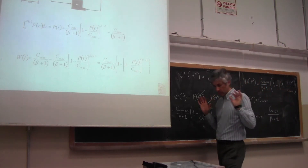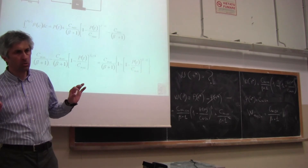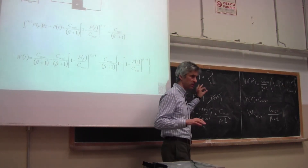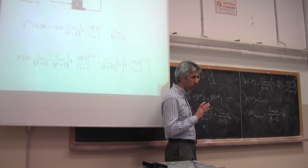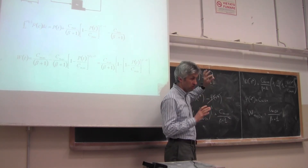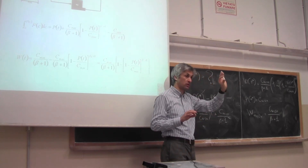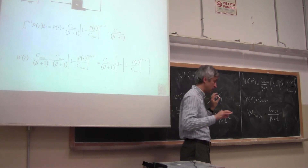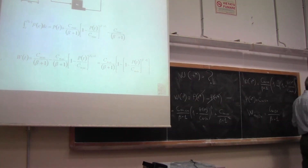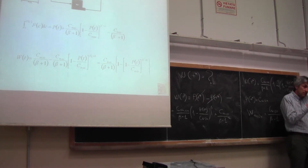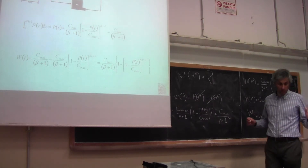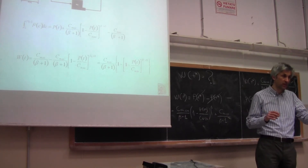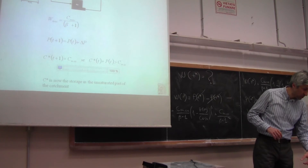Up to now we can compute at each time step the volume of water stored in the catchment and the volume of surface runoff. Once we know these two numbers at each time step, we can compute the river flow by taking the derivative of the volume. Now let me explain how from a numerical point of view we can move forward and write an algorithm.